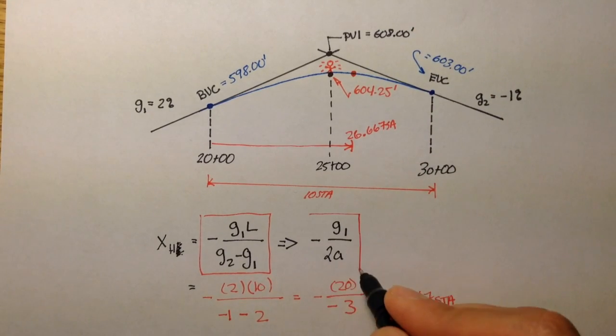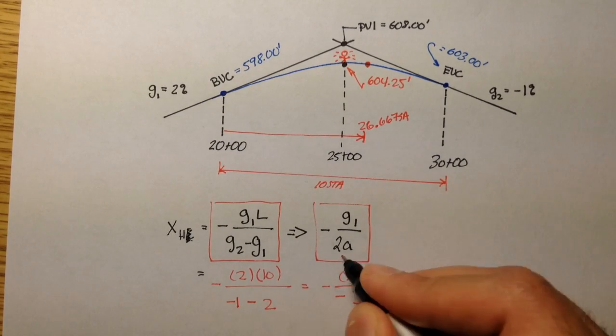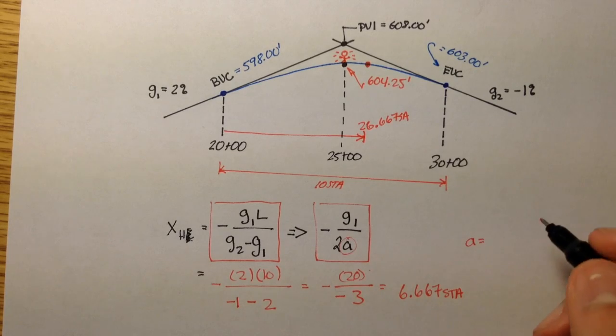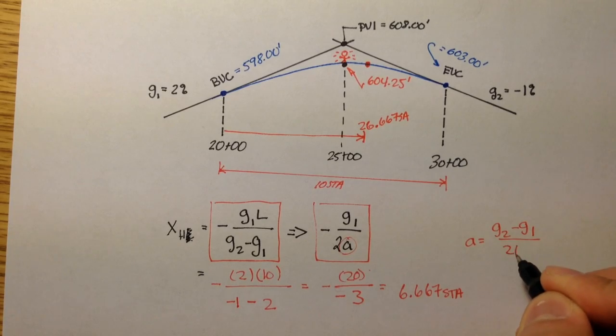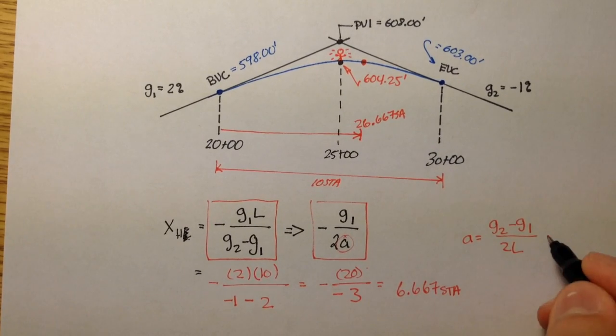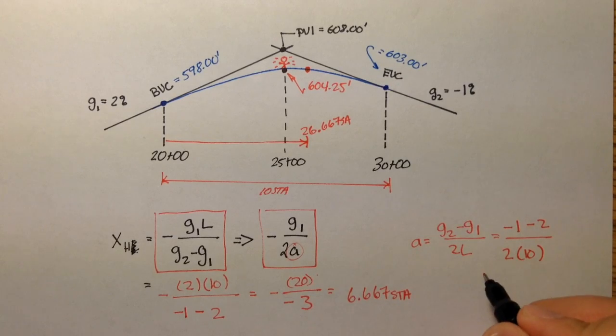If we were to use this formula, g1 over 2a times negative 1, you should get 6.67. So let me do the a variable first. a is going to be g2 minus g1 over 2l. And that is g2, which is negative 1 minus 2, over 2 times 10. If you solve this out, you'll get negative 3 over 20 for a.